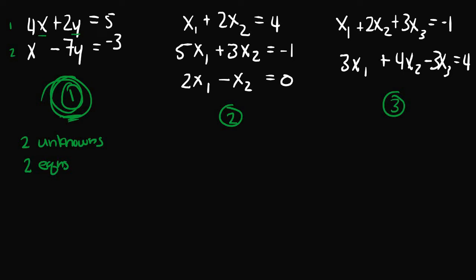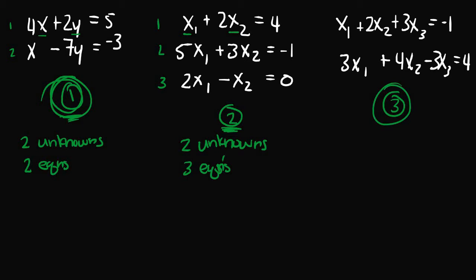In other cases, the number of unknowns may be less than the number of equations. Looking at system 2, we have two unknowns, x1 and x2 — there is no x3 or other variable. But we have 3 equations, so the number of unknowns is less than the number of equations. In system 3, we have three unknowns — x1, x2, and x3 — but only two equations, so the number of unknowns exceeds the number of equations.